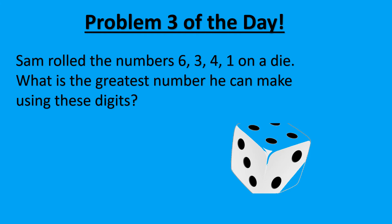To find the greatest number, that requires us to arrange these numbers in order from greatest to least, which means we will start with the six, followed by the four, then the three, and then the one. So what is our number? Six thousand four hundred thirty-one.